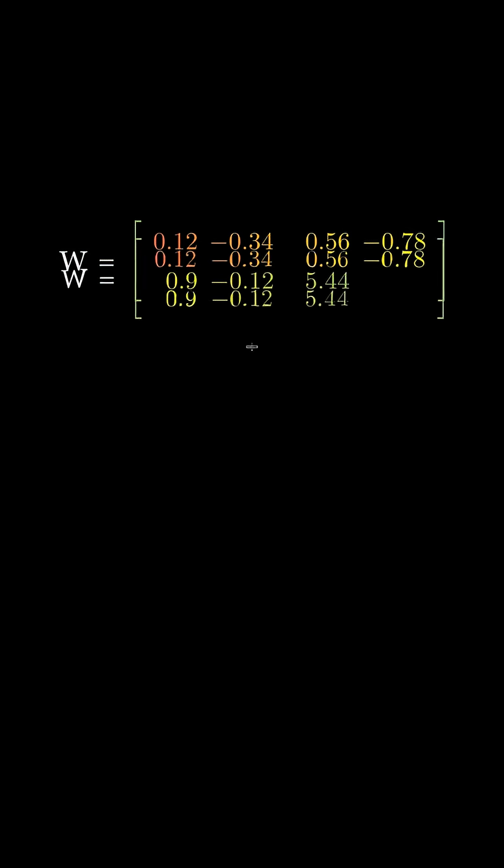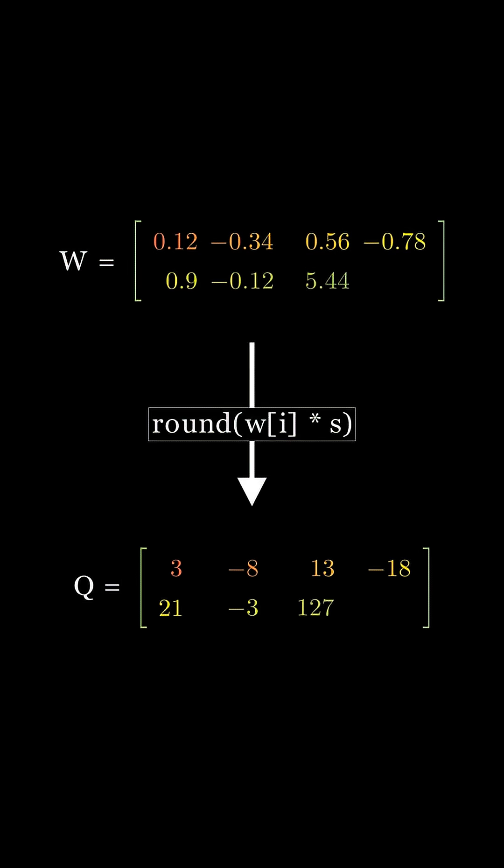Now, multiply each weight by the scaling factor and round to the nearest integer. These are our final 8-bit quantized weights.